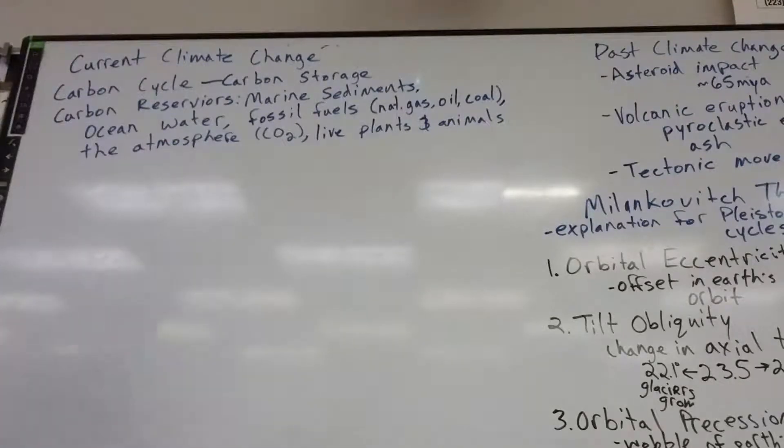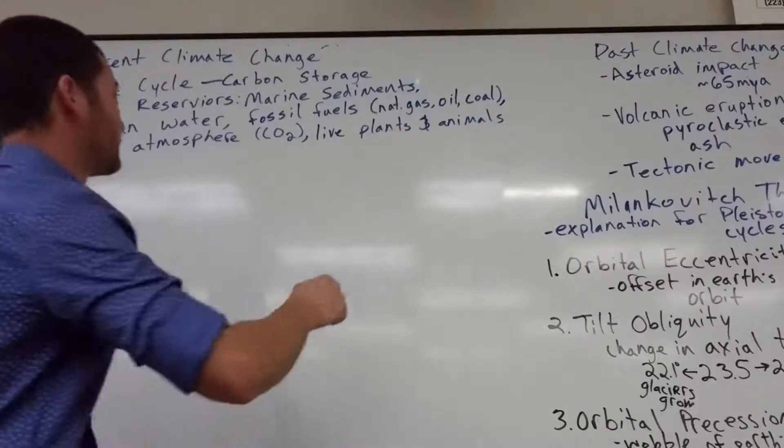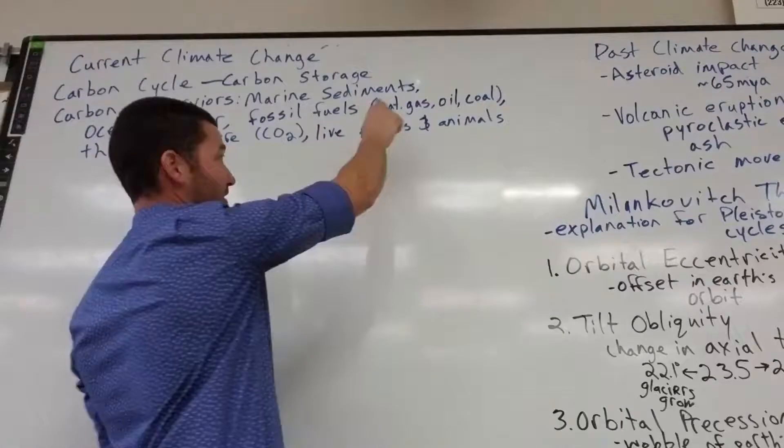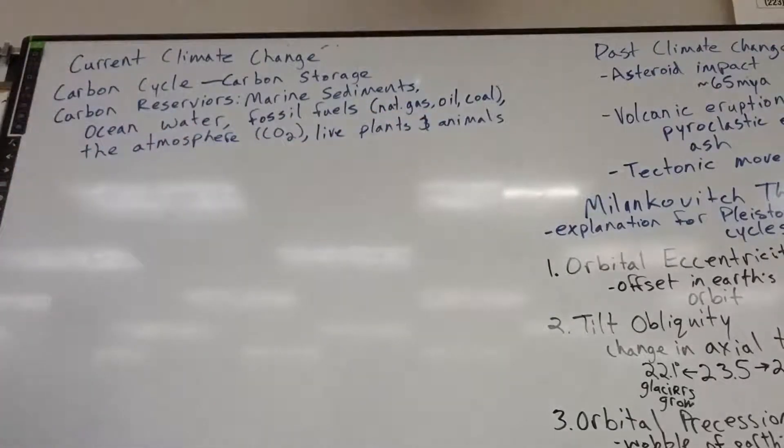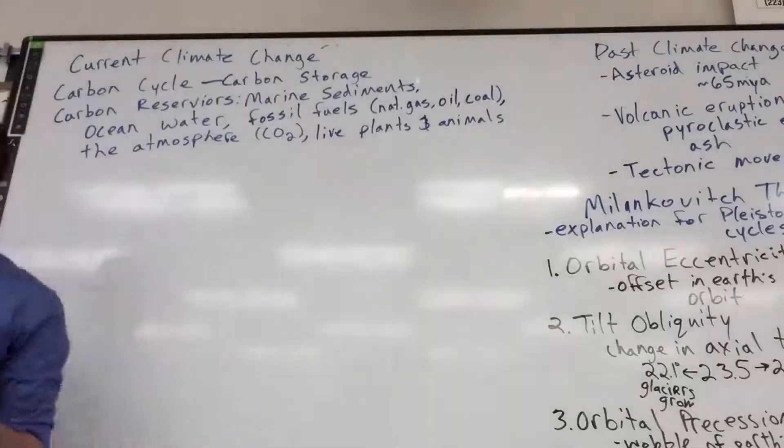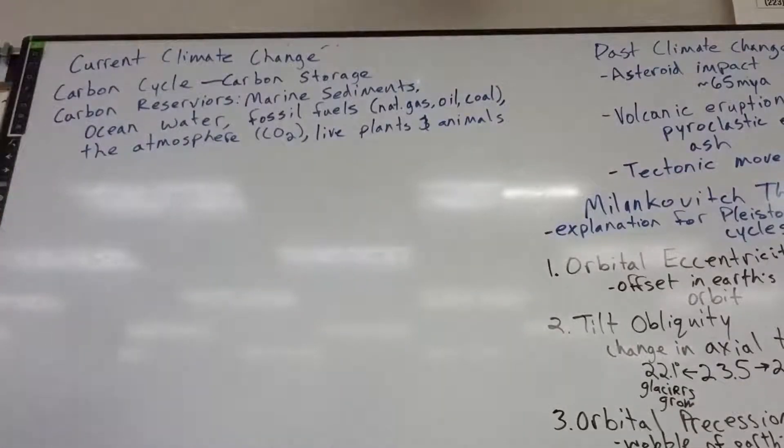So starting in the 1850s, Industrial Revolution, humans started taking carbon from fossil fuels, coal and oil mostly. Mostly coal first, followed by oil. And now we're really getting into natural gas. We're taking that carbon, and we are instead putting the carbon into the atmosphere. So we're just changing carbon reservoirs. Big deal. Why does that cause problems? It causes problems because of the greenhouse effect.